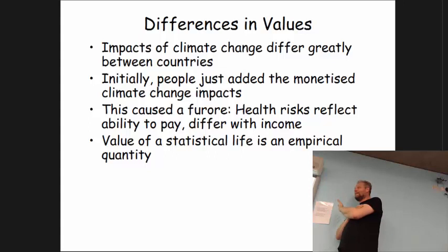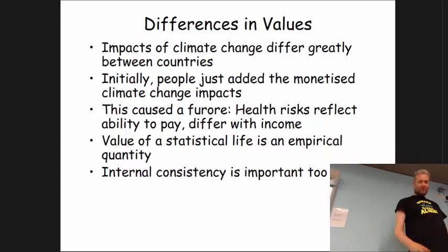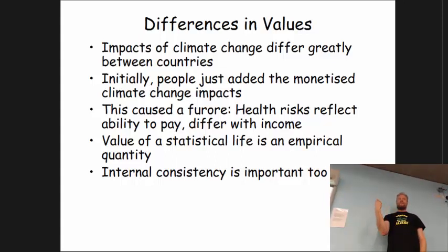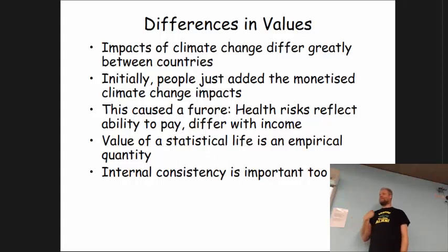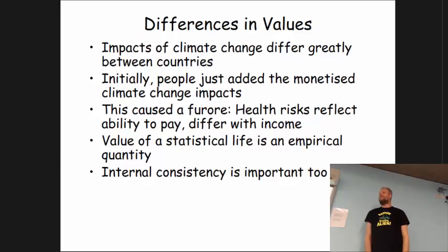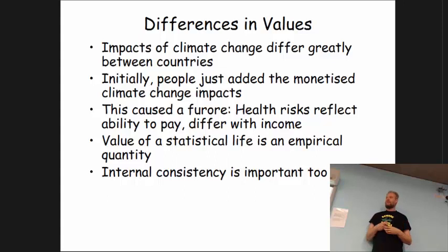This is not because Bangladeshis are worth less than English people — it is because willingness to pay to avoid mortality risk is a function of ability to pay. Poorer people can pay less and therefore are willing to pay less, making it seem as if their life is worth less. If you say such a thing in a UN context, you are in trouble. In the UK we use an average statistical value of life, which we can get away with because we have income transfers. But in an international context, you can't just switch to an average value.